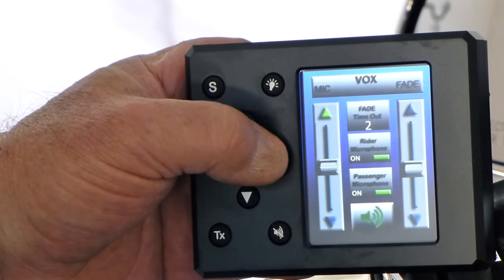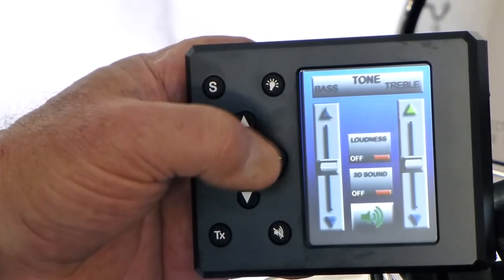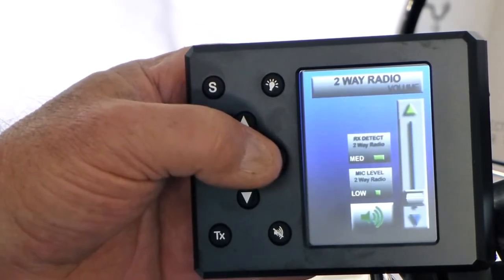Second screen is the vox screen. Third screen is the tone screen. Fourth is the balance screen. Fifth is the two-way radio.